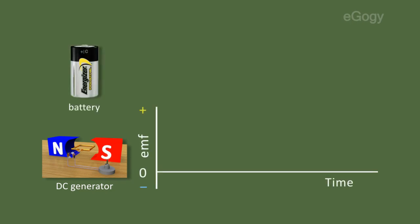Let's see the difference between the EMF from a DC generator and a battery. The EMF from battery is of constant intensity and without any fluctuations. But the EMF from the DC source is pulsating.